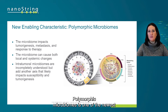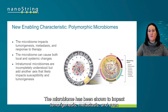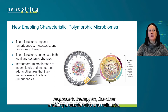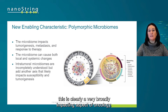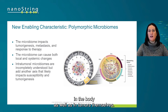Polymorphic microbiomes is one of the newest but probably most exciting of the enabling characteristics, at least to a number of researchers. The microbiome has been shown to impact tumorigenesis, metastasis, and even response to therapy. Like other enabling characteristics and hallmarks, this is clearly a very broadly impacting aspect of oncology. We know that the microbiome leads to both local and systemic changes in the body as well as in tumors themselves.